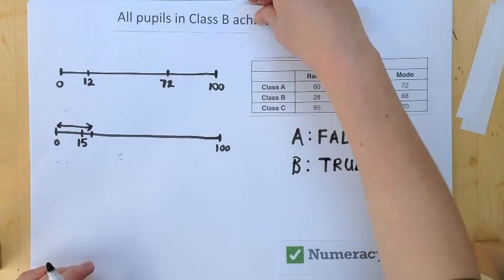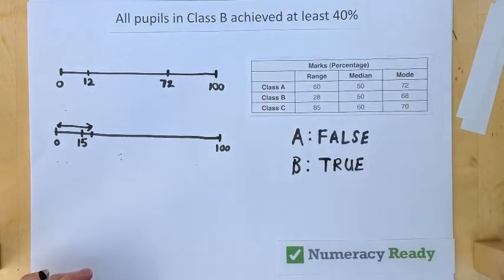Finally, let's look at Statement C. All pupils in Class B achieved at least 40%. Again, let's consider our mode of 68.